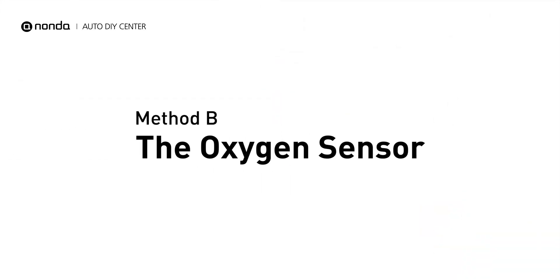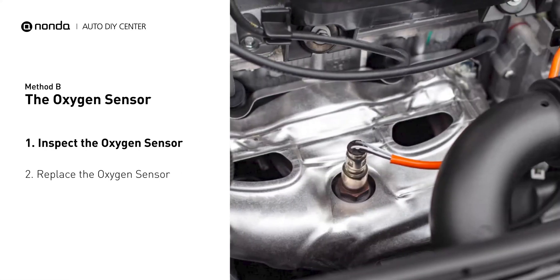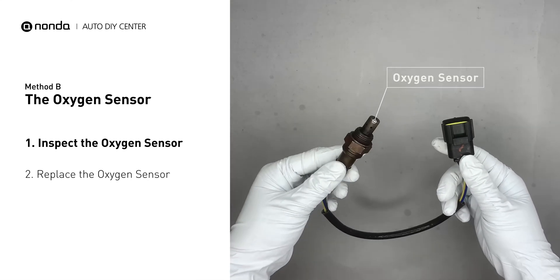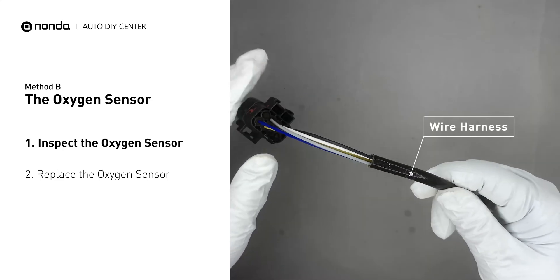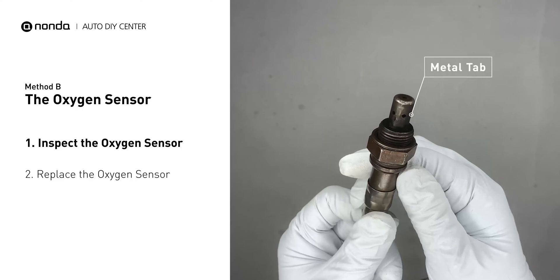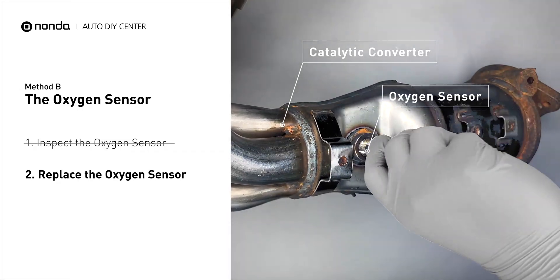Method B: the oxygen sensor. Oxygen sensors are mounted directly onto the exhaust pipe near the catalytic converter. Locate the sensor that responds too slow as it ages. Visually check the oxygen sensor's electrical connections, wire harness, and metal tabs for any damages. If damages are found, then replace the oxygen sensor.